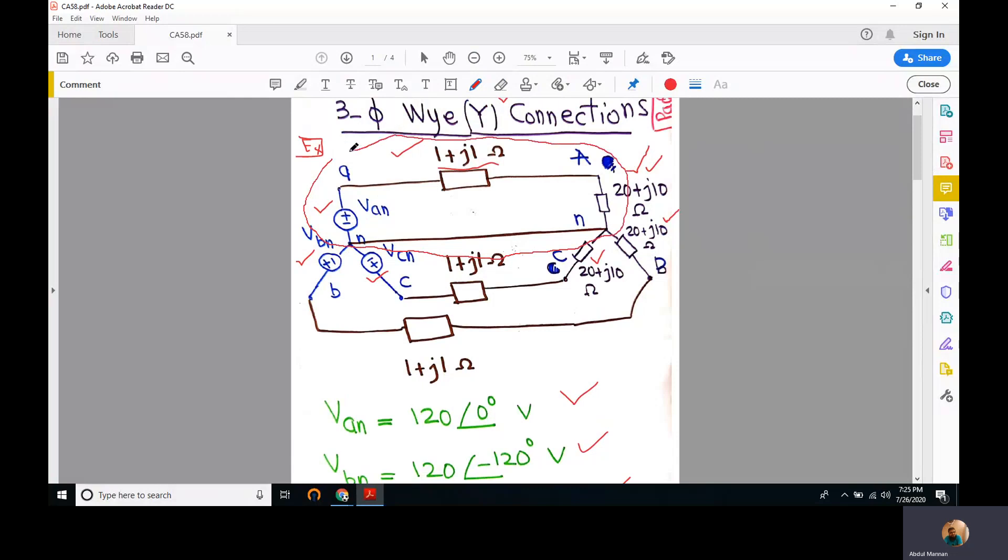We can make things easier by considering any one phase of the three phases. We have picked phase A only, and the remaining calculations we don't have to make. Once we compute Ia, Ib and Ic can be computed straightaway because Ib would be 120 degrees apart from Ia and Ic would be 240 degrees apart, delayed by 240 degrees compared to Ia. So finding Ia is enough.